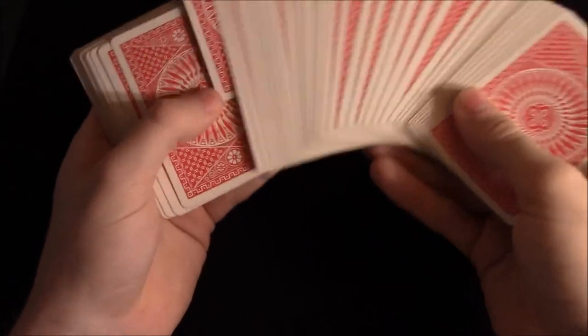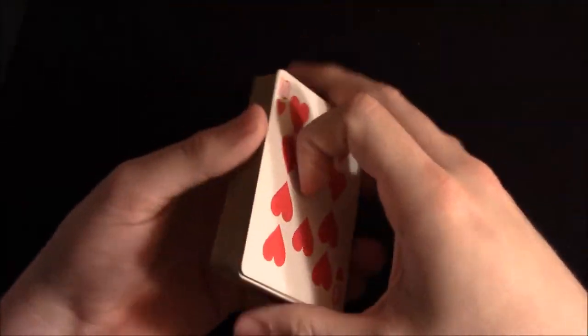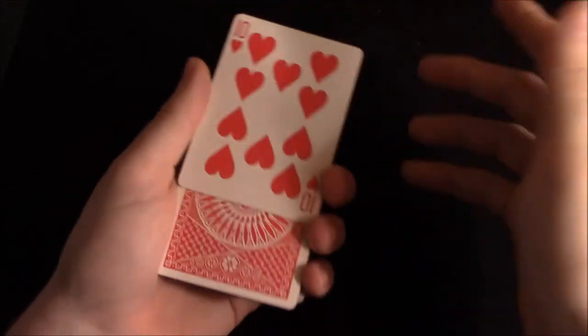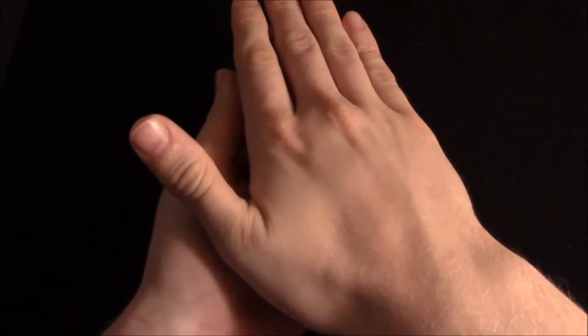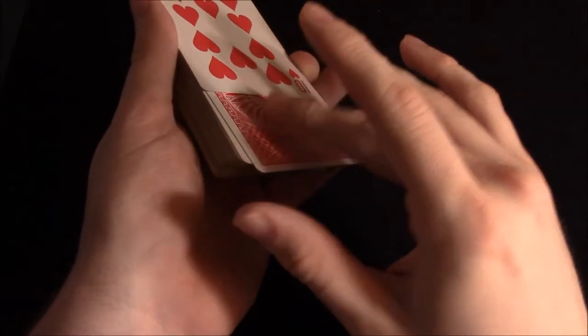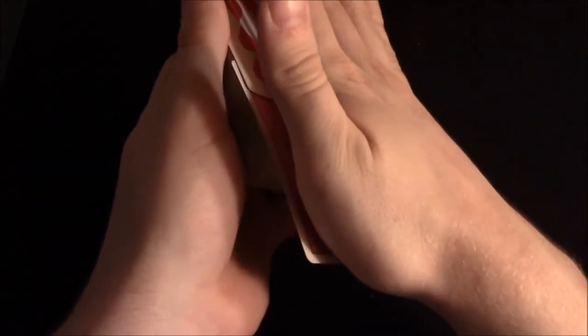You have any card selected, or you can just take one yourself, it doesn't matter. Say ten of hearts, and you say okay watch, I'll put my hand over the ten, and what you're doing is you're pulling back this card with this part of your hand, just like this.